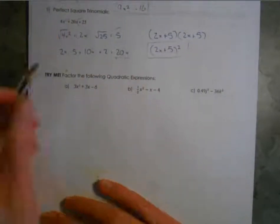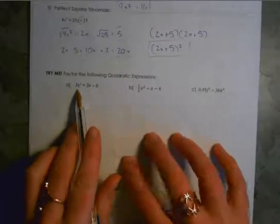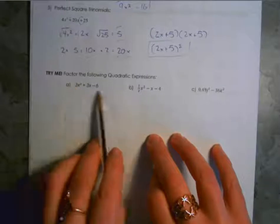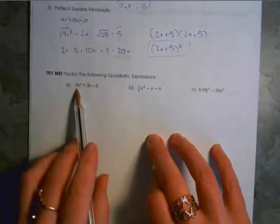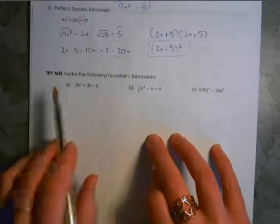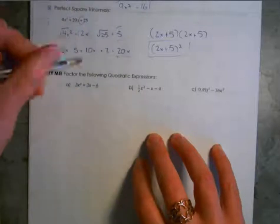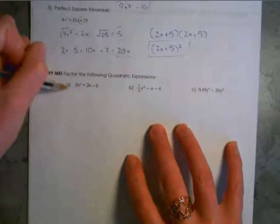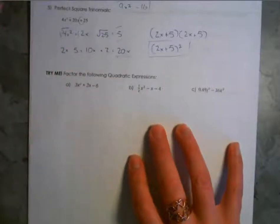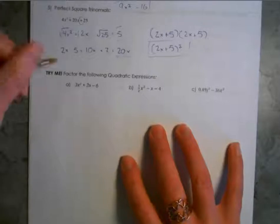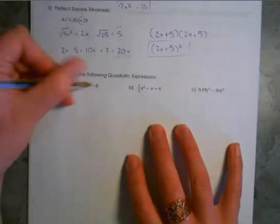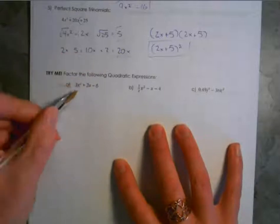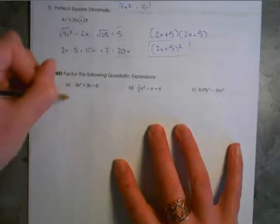One thing we haven't looked at much here is pulling out a common number factor. With this value here — it's ax squared plus bx plus c — we used the swing method. So let's have a look at what happens when you use the swing method here. Essentially we're just taking the first value and multiplying it by the last. We end up with x squared plus 3x, and then 3 times negative 6 gives us minus 18.